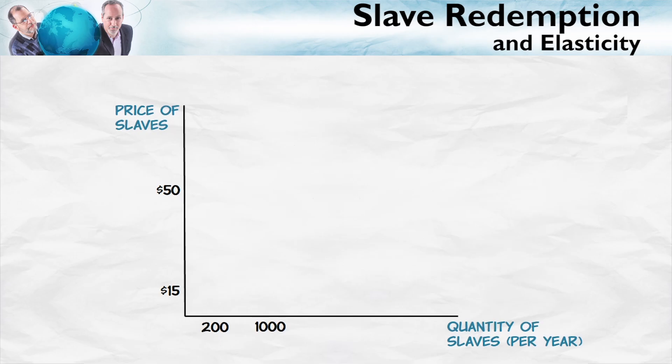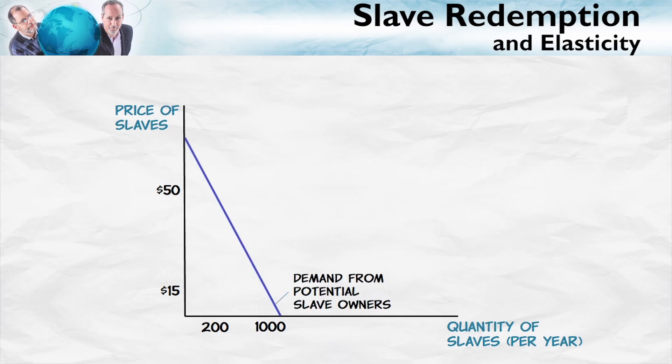Let's begin our analysis. We'll put the price of slaves on the vertical axis, the quantity on the horizontal axis. And this is the demand for slaves from potential slave owners — the demand, if you like, from the bad guys. It often helps in these situations to begin with a polar case.